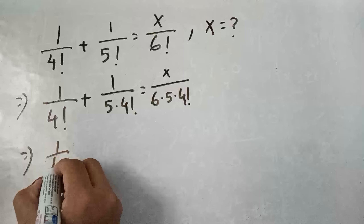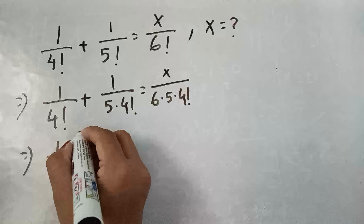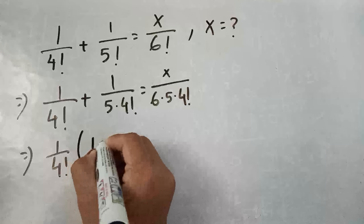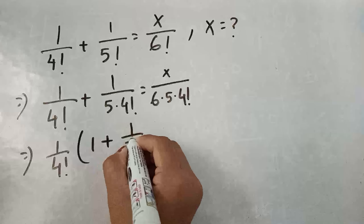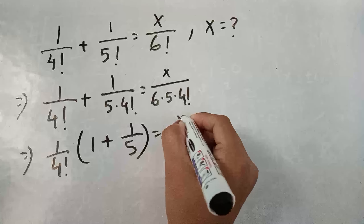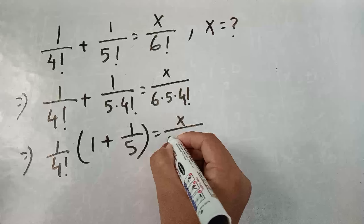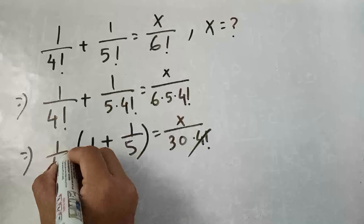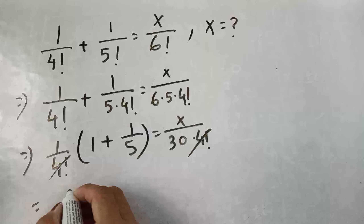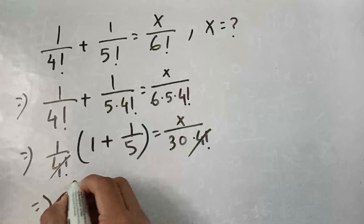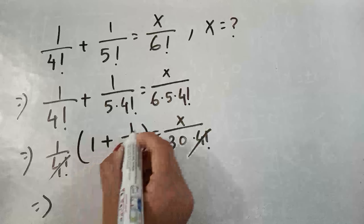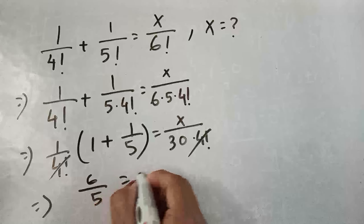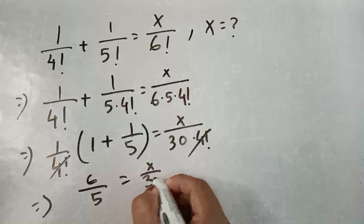1 by 4 factorial is common here, so we can write it as 1 by 4 factorial times 1 plus 1 by 5, equals x by 30 into 4 factorial. We can cancel the 4 factorial, so it becomes 1 plus 1 by 5, which equals 6 by 5, equals x by 30.